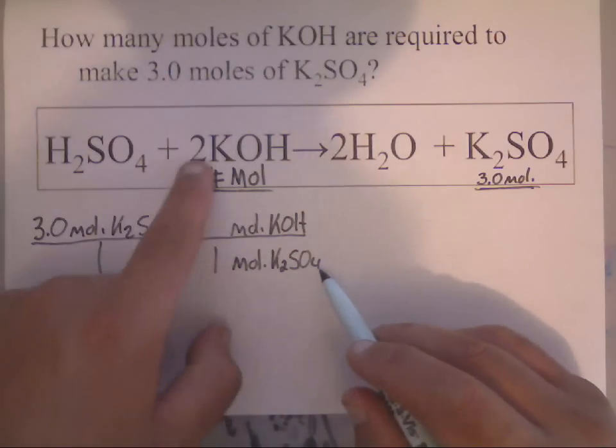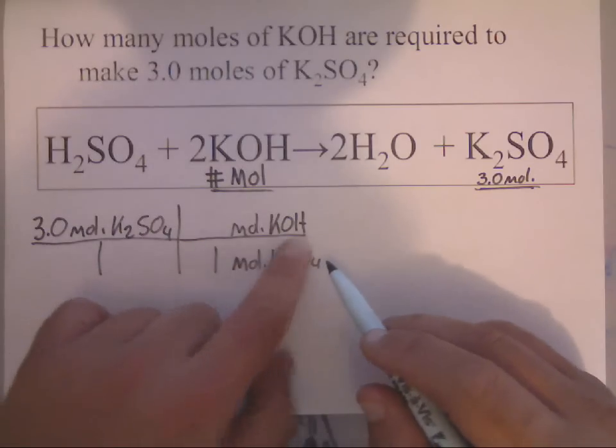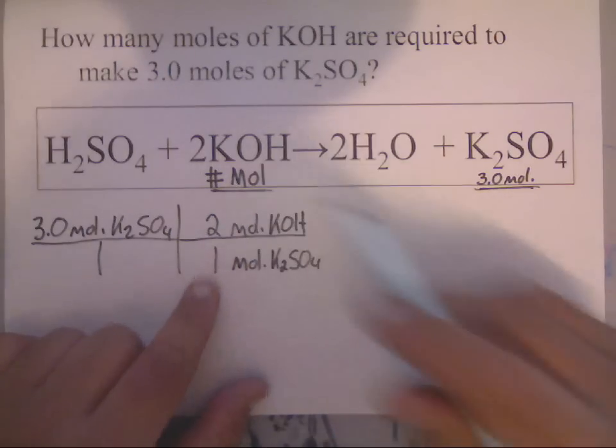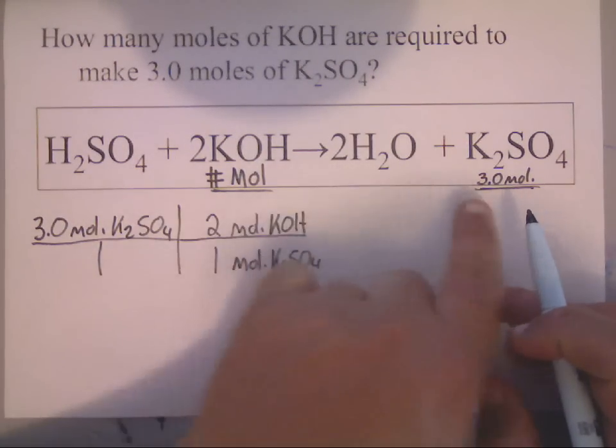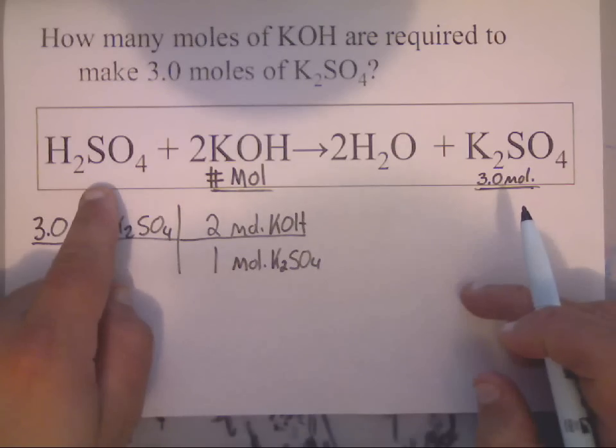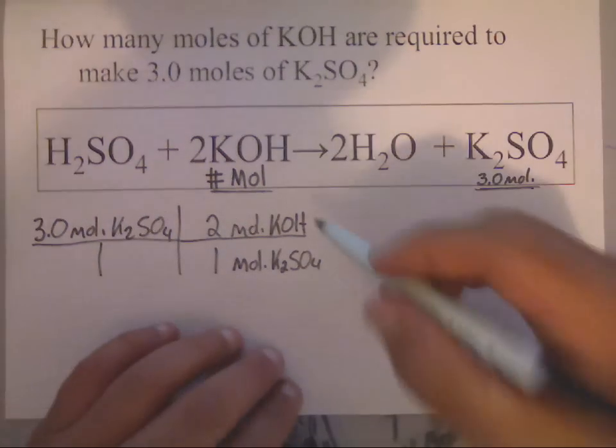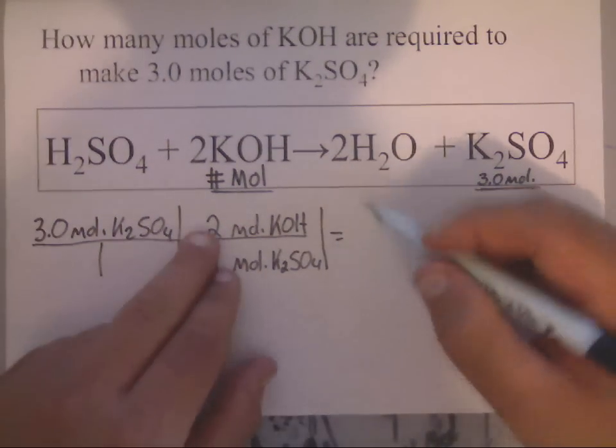Now, after I do that, I need numbers to go in the front of here. Now, in the molar ratio, the numbers that go in the front here will be this 2 and this 1. The 1 will go in front of the mole of K₂SO₄. The 2 will go in front of the mole KOH.